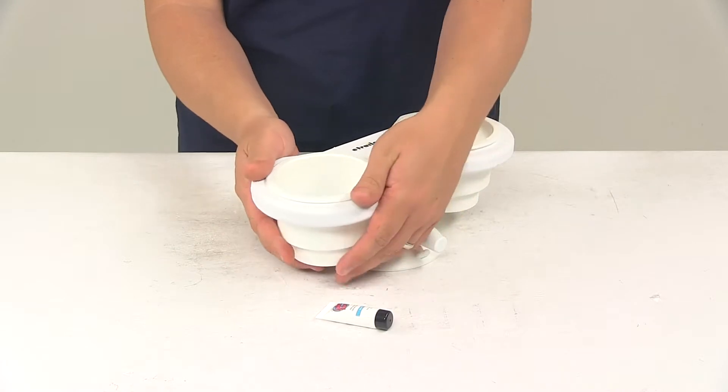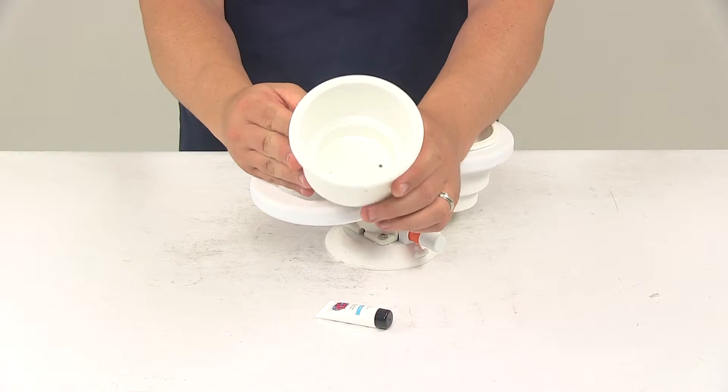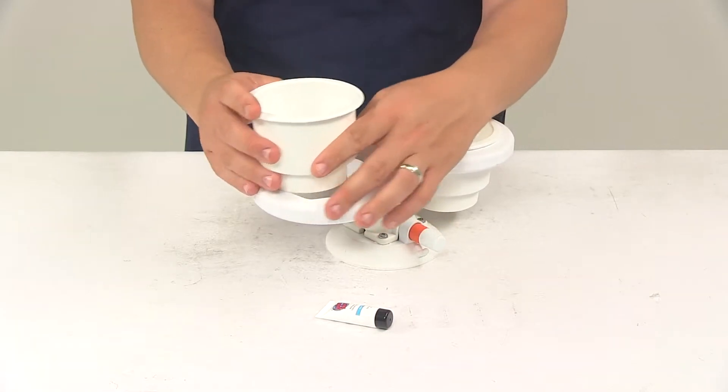The cup holder inserts remove for easy cleaning and can be swapped out for a small dry box that's available and sold separately at eTrailer.com.